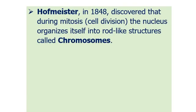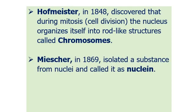They used Neurospora crassa for their experiments. Aptingara in 1848 discovered that during mitosis the nucleus organizes itself into rod-shaped structures called chromosomes. Mesh in 1869 isolated a substance from nuclei and called it Nuclein.